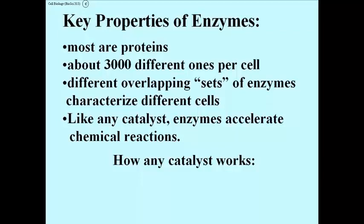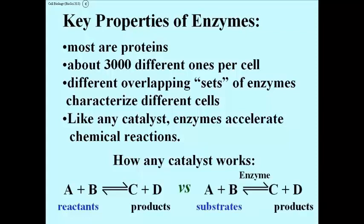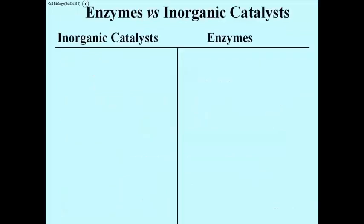Like any catalyst, enzymes accelerate chemical reactions. Here's a reaction occurring very slowly in the absence of a catalyst — reactants are converted to products slowly — versus a catalyzed reaction, in this case catalyzed by an enzymatic catalyst, which happens very fast. When we look at enzymes, we're talking about substrates being converted to products. We use the word substrates for reactants in enzyme-catalyzed reactions.